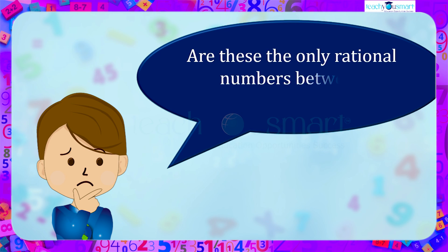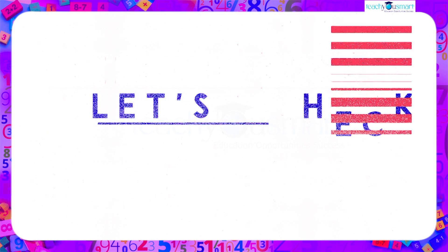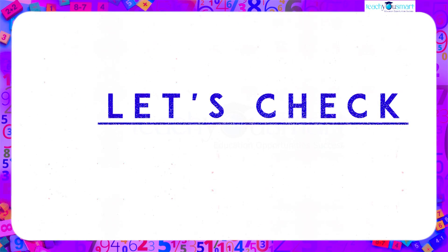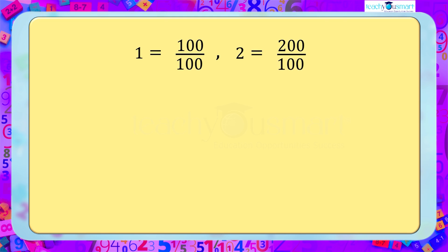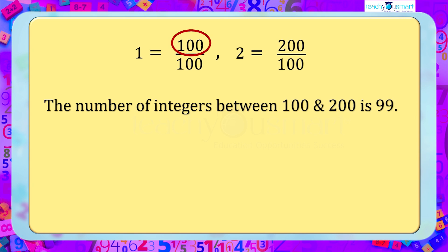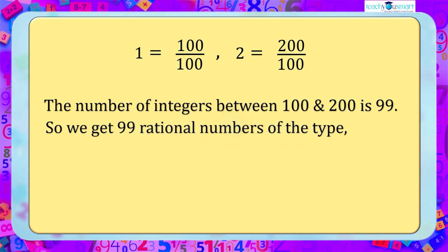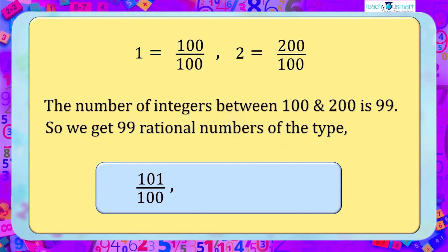Are these the only rational numbers between one and two? Let's check. If we make the denominator higher — if the denominator is 100 — we get one as 100 by 100 and two as 200 by 100. The number of integers between 100 and 200 is 99, so we get 99 rational numbers of the type 101 by 100, 102 by 100, etc., up to 199 by 100.